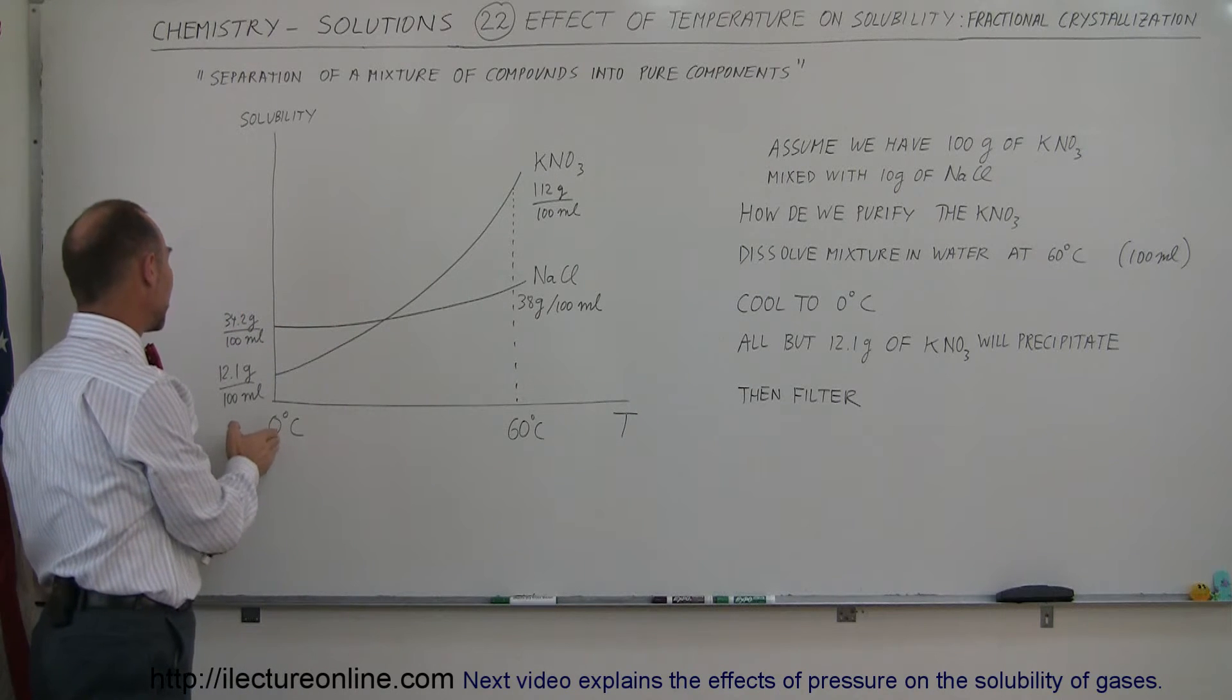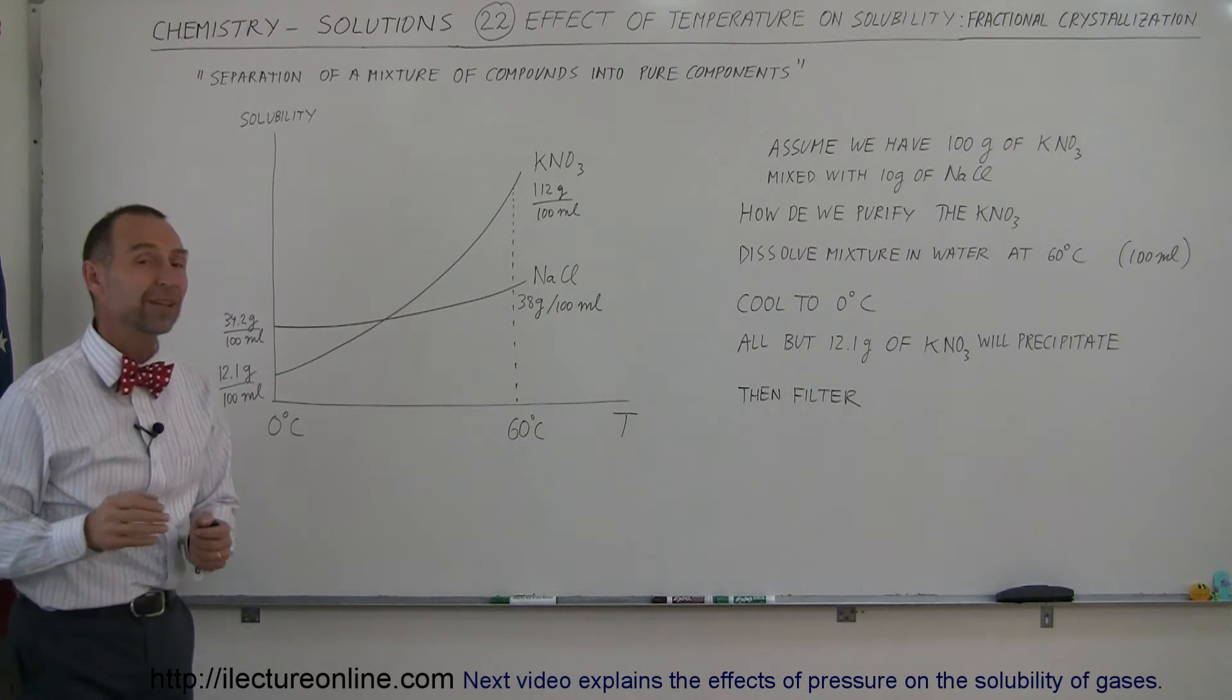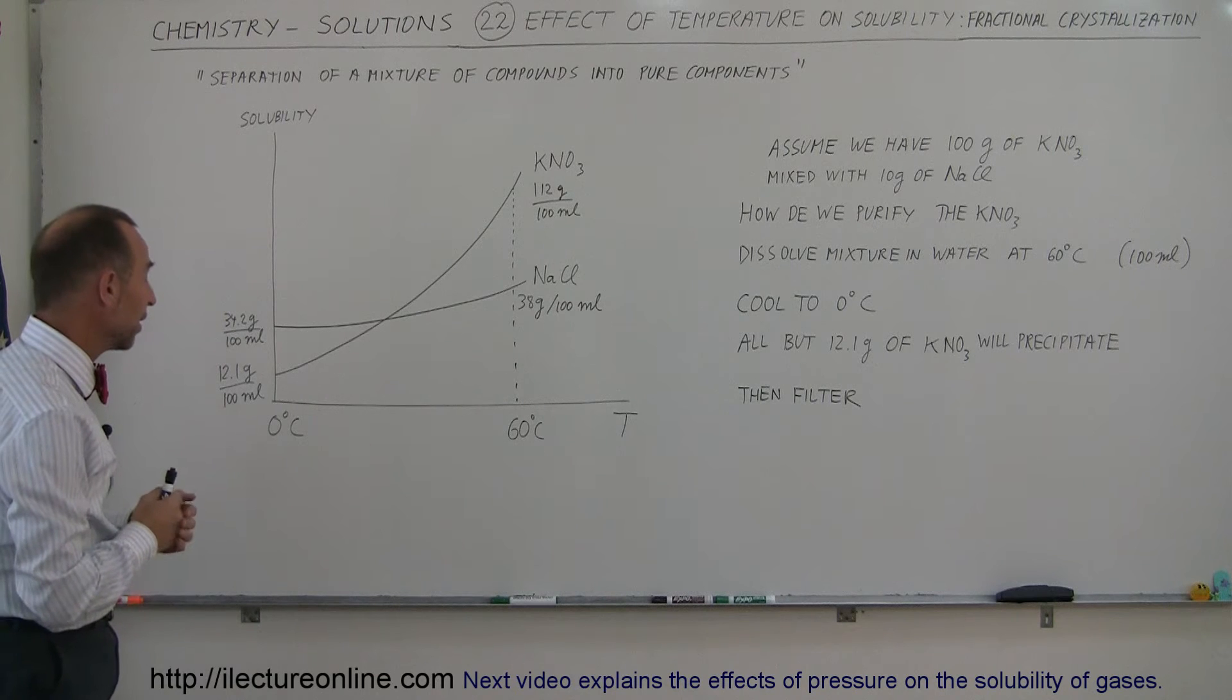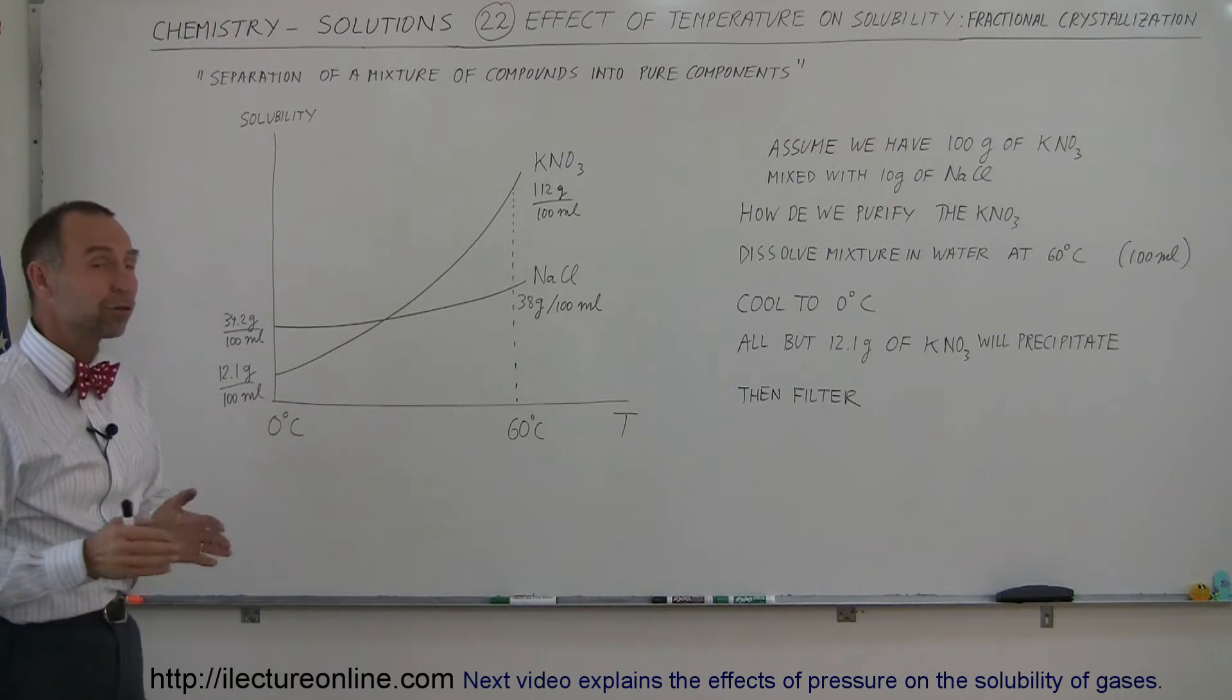And when the water is zero degrees centigrade, we can only dissolve 12.1 grams of potassium nitrate per 100 milliliters of water. So you can see that's a huge difference.